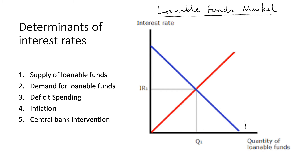In this market, we have the demand for loanable funds coming from consumers and producers, and we have the supply of loanable funds coming from domestic and foreign savers. Changes to both the demand and supply curves of loanable funds can affect the real interest rate — the real interest rate being in effect the price of loans, as it is the cost borne by borrowers and the return to savers when they lend. The supply of loanable funds could change depending on consumer and business sentiment. For example, if future economic conditions are uncertain, households and businesses may decide to save more for a rainy day, increasing the supply of loanable funds, which — ceteris paribus — would lead to a fall in the real rate of interest.